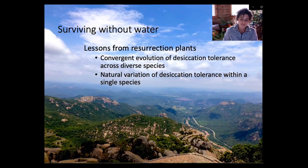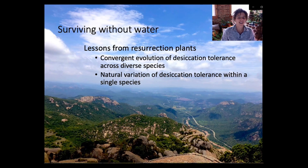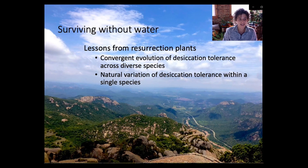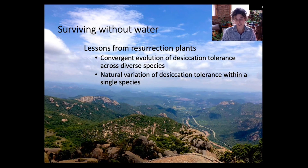With that I'm going to shift gears completely and spend the rest of my talk discussing some of my empirical research studying resurrection plants in South Africa. I've divided this part into two small vignettes. The first approach looks at convergent evolution of desiccation tolerance across really diverse species, and the second approach is much more targeted, looking at natural variation within a single species to identify targeted components of desiccation tolerance.